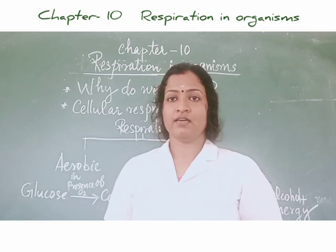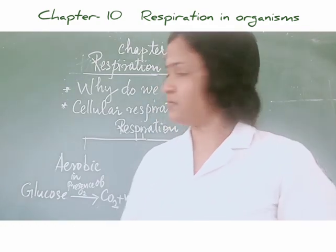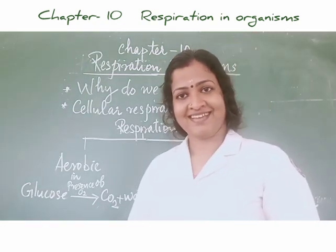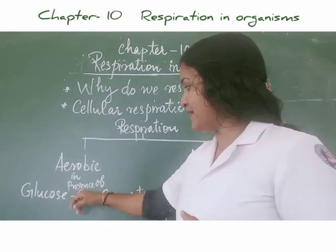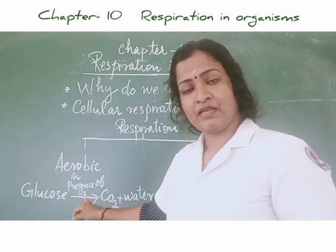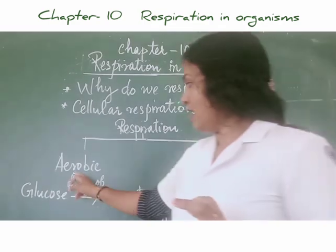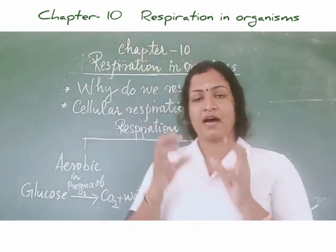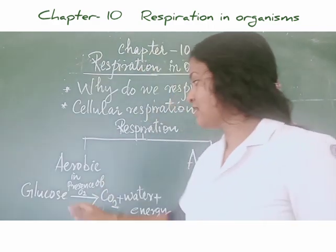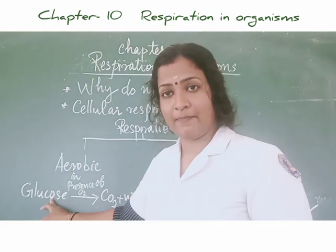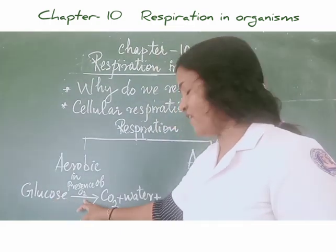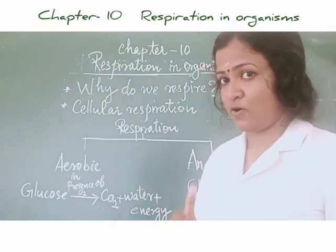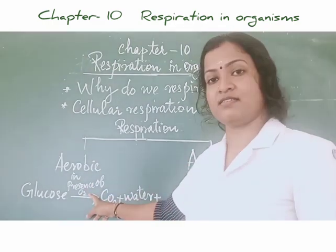We can classify respiration into two types: aerobic respiration and anaerobic respiration. Aerobic means in the presence of oxygen. So in aerobic respiration, glucose — the smallest unit of the food molecule — will be broken down to form carbon dioxide, water, and energy. This process only takes place in the presence of oxygen.